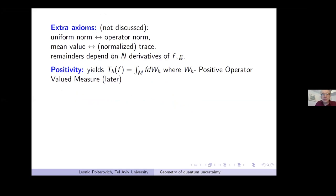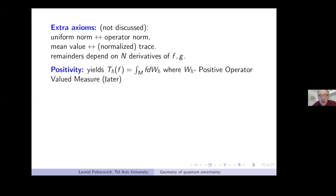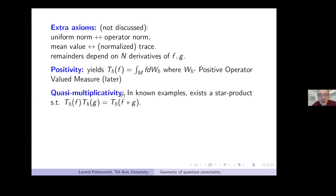The positivity axiom means that the Berezin-Toeplitz operator T_{h-bar}(f) is just the integral of f against some positive operator-valued measure. This is an important character in this talk and will be discussed later in more detail. Quasi-multiplicativity is a remnant of the following: in all known — indeed all interesting — examples there exists a full star product.